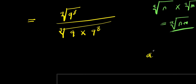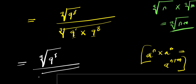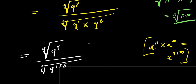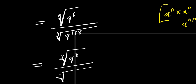Now remember, if you have a to the power of n times a to the power of m, this equals a to the power of n plus m. This is raised to the power of 1, and since these are the same base we add the exponents. So what we have is the 9th root of 9 to the power of 8, divided by the 9th root of 9 to the power of 1 plus 8, which is 9.